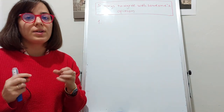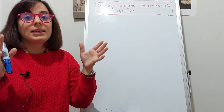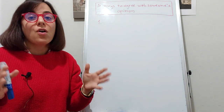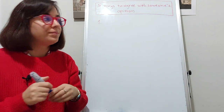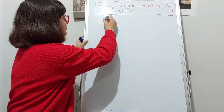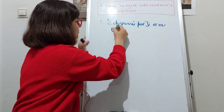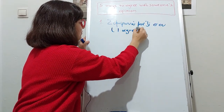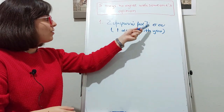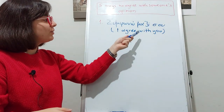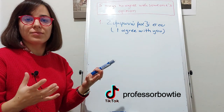The first way to agree with someone is to say: Συμφωνώ μαζί σου — I agree with you. Συμφωνώ μαζί σου — I agree with you.